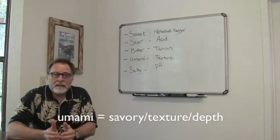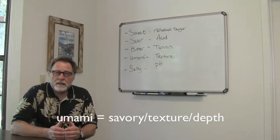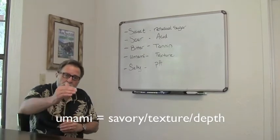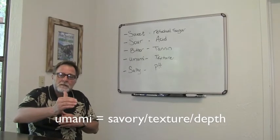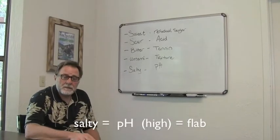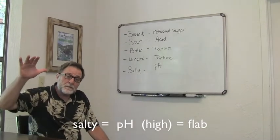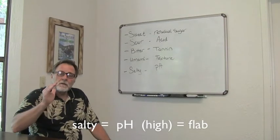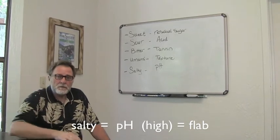Umami is the aspect of savory or texture. It's what gives you depth, the 3D dimension of wine itself. And salty, last but not least, is a measurement of pH. The higher pH in a wine, the more salty or flabby a wine will taste.